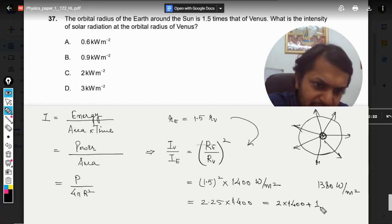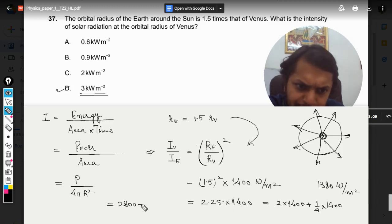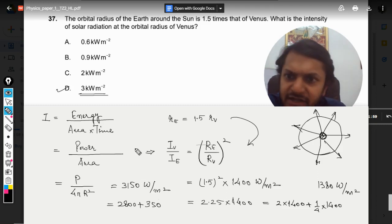Approximately, it would be coming out to be 3000 watt per meter squared. This value is coming out to be 2.25 × 1400, which equals 3150 watt per meter squared.